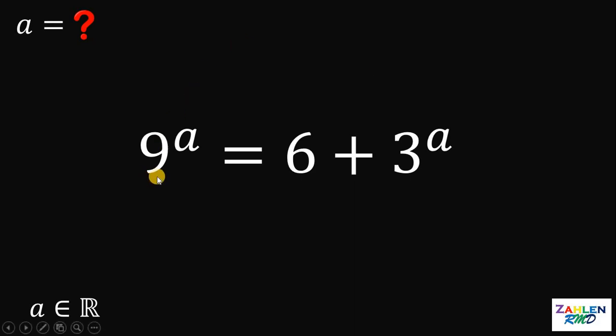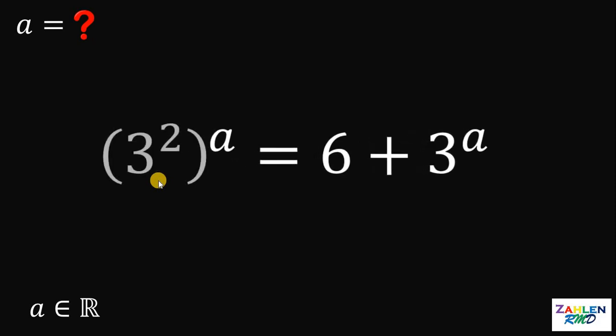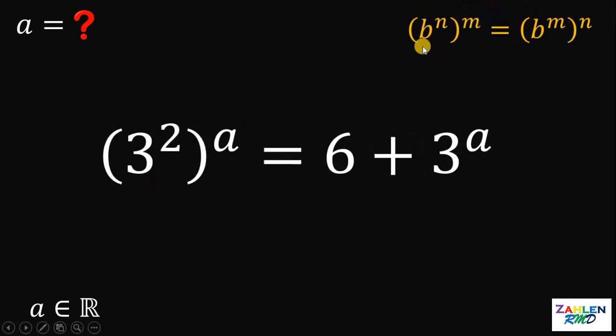Take note that this 9 can be written as 3 squared. Let's use some laws of exponent. If we have b raised to n raised to the power of m, it is equivalent to b raised to m raised to the power of n. Therefore, this 3 squared raised to a can be written as 3 raised to a quantity squared.